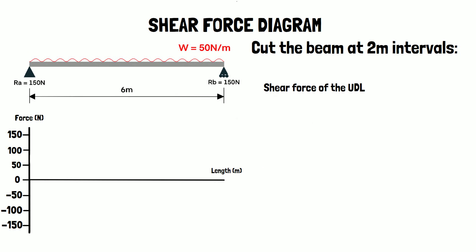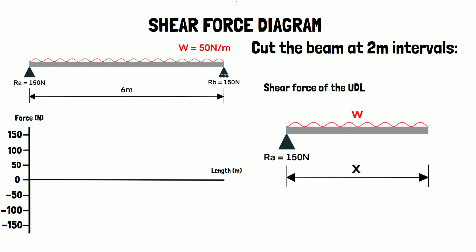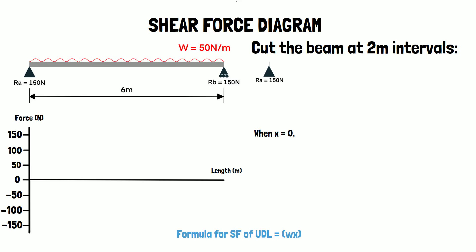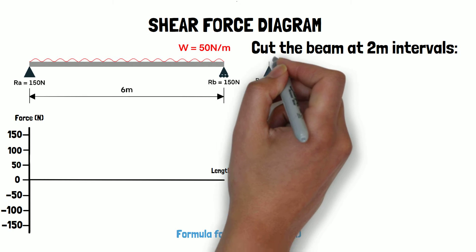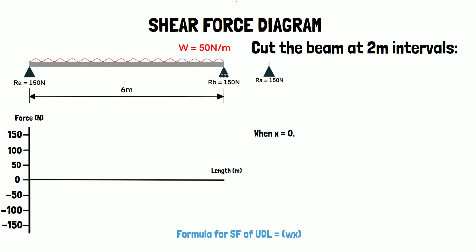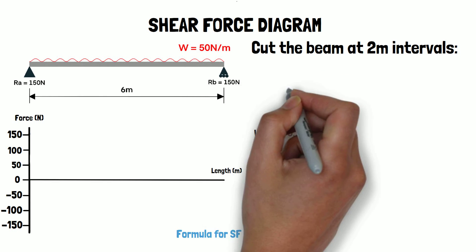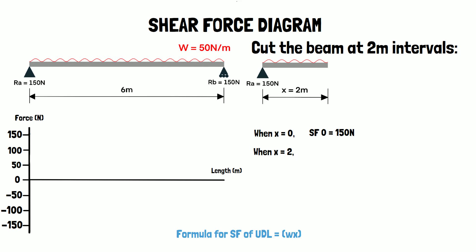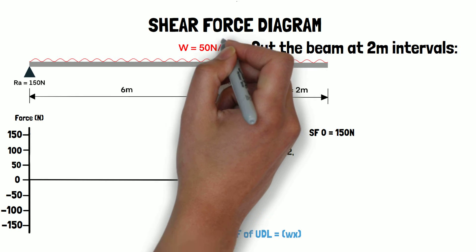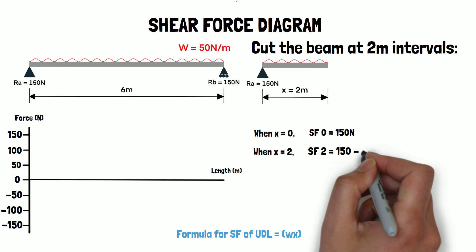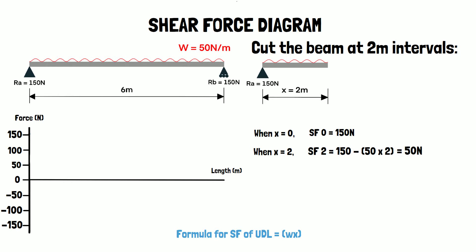To calculate the shear force of the UDL we'll multiply W by the distance x to the left of the cut. When x equals zero, the only force acting is the 150 newton reaction force RA, so the shear force is positive 150 newtons. When x equals two, we have RA minus the UDL contribution: 150 minus 50 times 2, which equals 50 newtons.